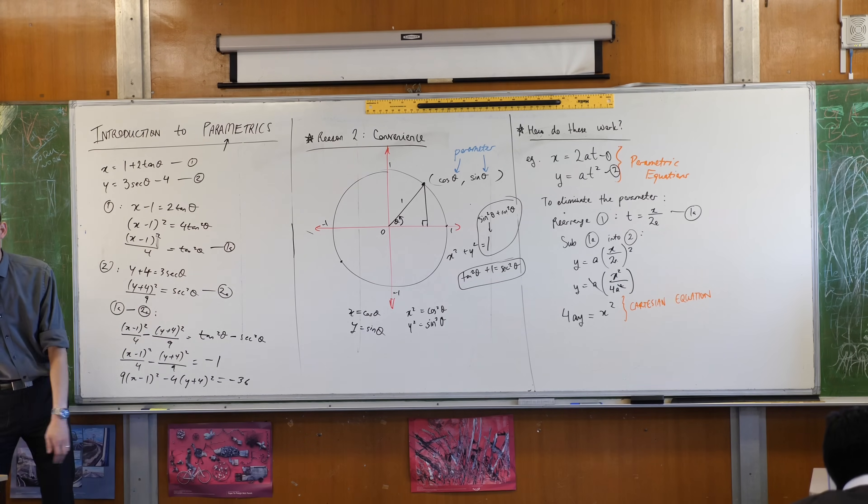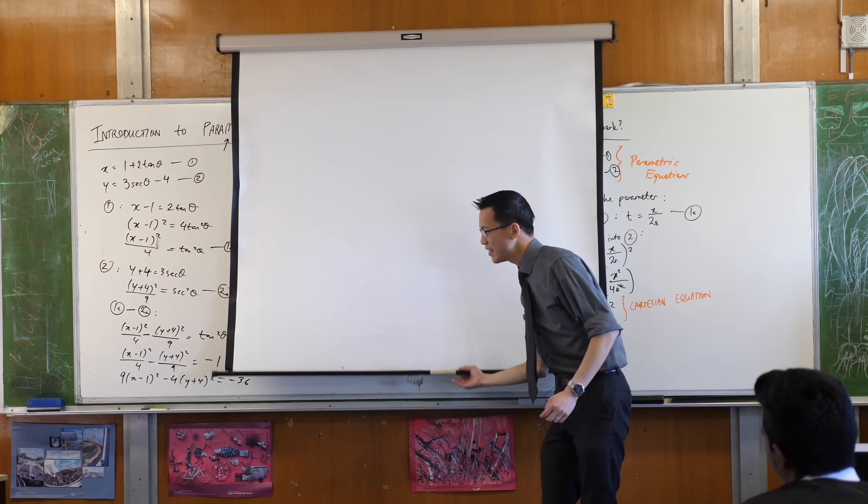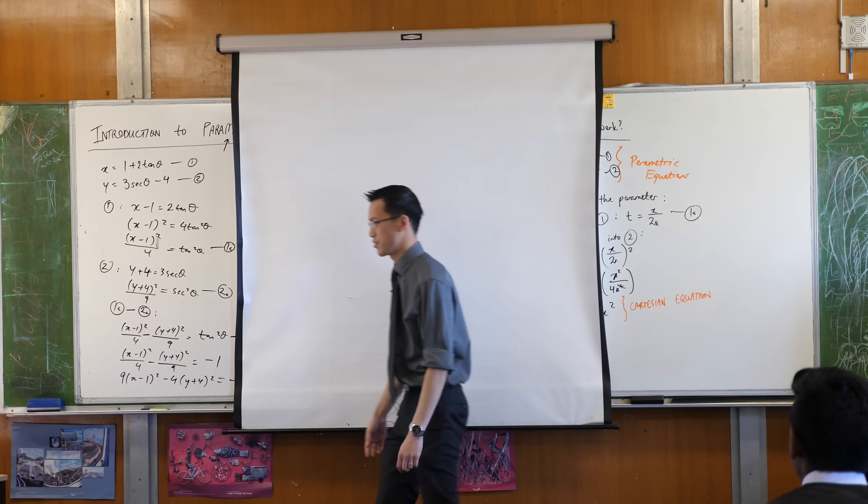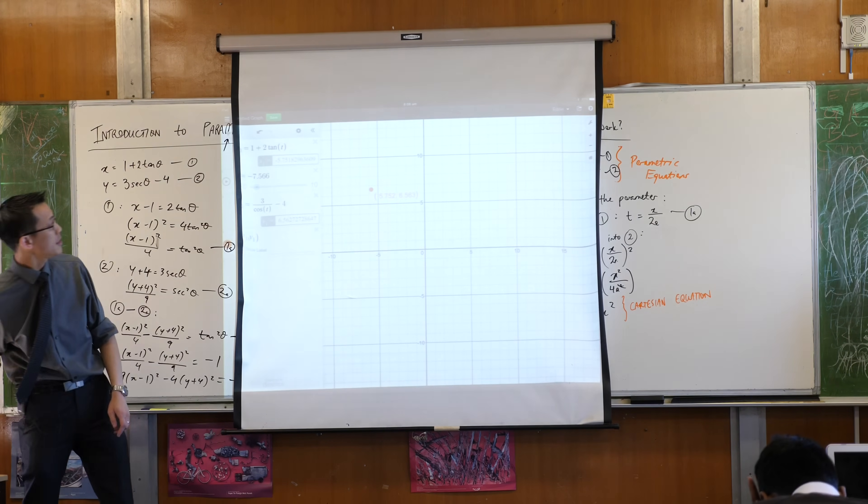Now what is that? Well you don't know what this is yet, you haven't met this shape yet, but suffice to say it is a parametric, sorry it is a Cartesian equation. Now what Cartesian equation is it?